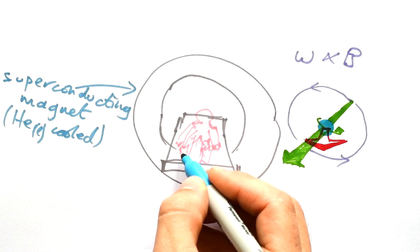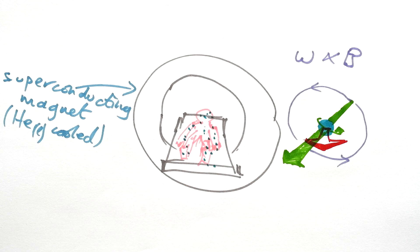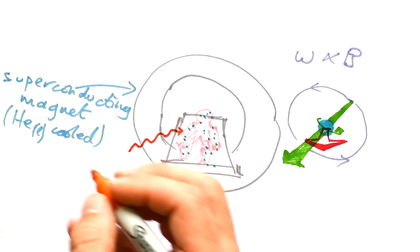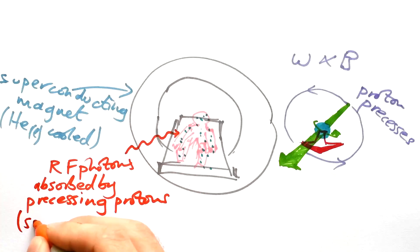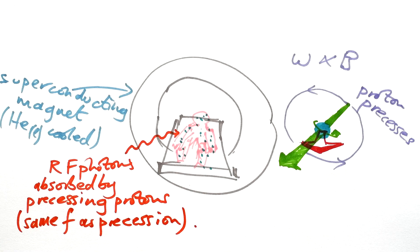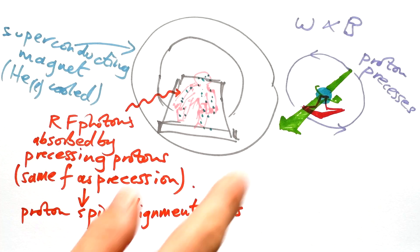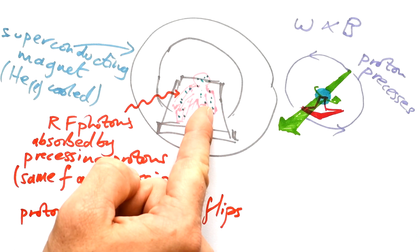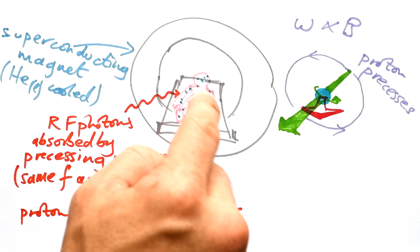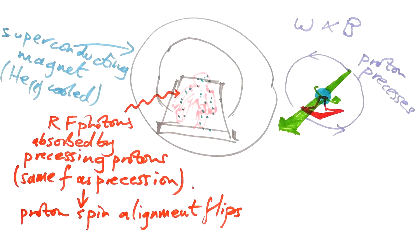So once you've got all these protons in your body precessing, they're able to absorb certain frequency photons and they're in the range of radio frequencies. So we say RF photons and these have the same frequency as the precession of the protons. What happens when they do this? Proton spin alignment flips. So let's say that this proton's axis of rotation was in this direction towards the camera out of the page as it were. When it absorbs a photon, it flips. And so now the axis of rotation is going in the other direction. In other words, it spins the other way.